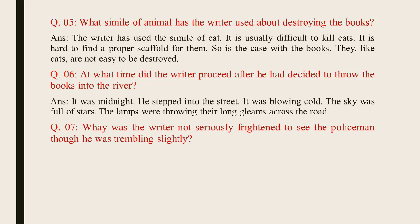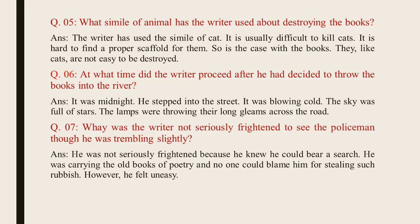Question number 7: Why was the writer not seriously frightened to see the policeman, though he was trembling slightly? The answer is, he was not seriously frightened because he knew he could be at a search. He was carrying the old books of poetry and no one could blame him for stealing such rubbish. However, he felt uneasy.